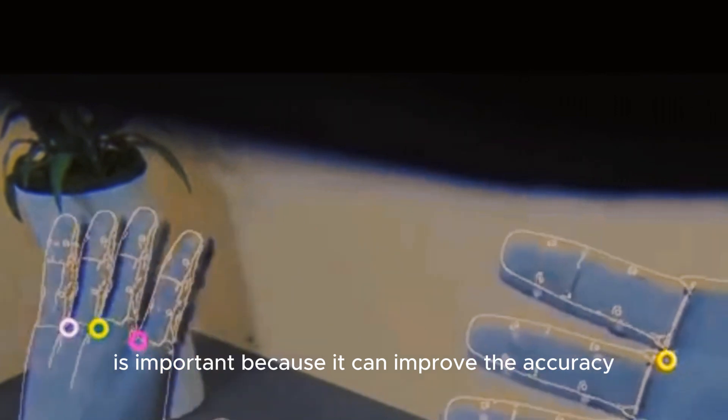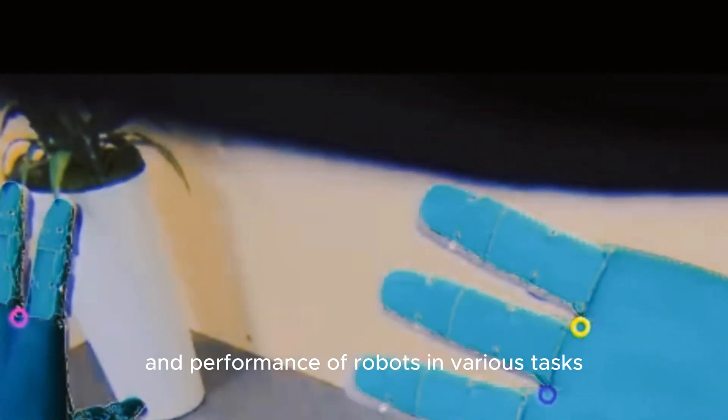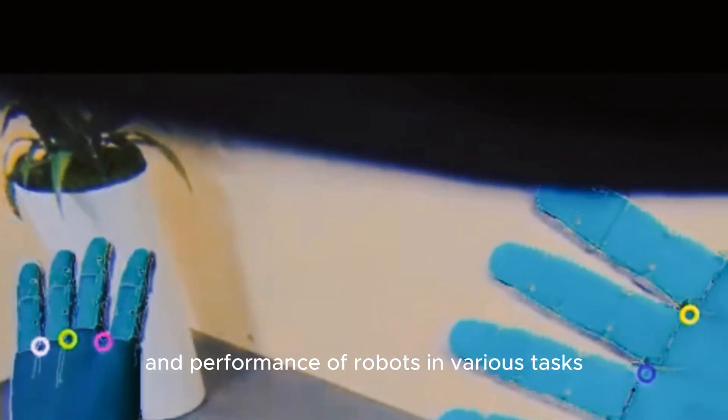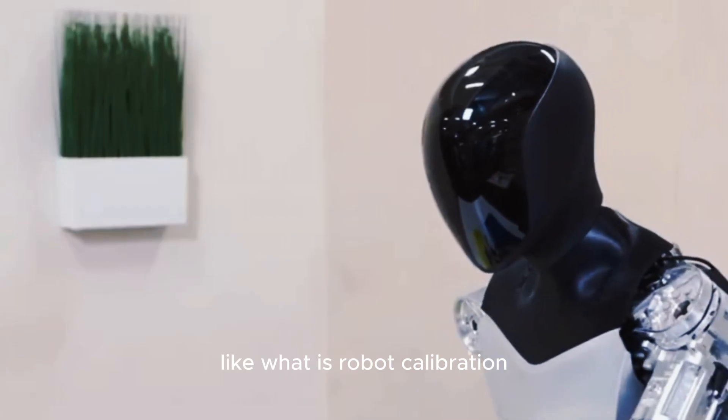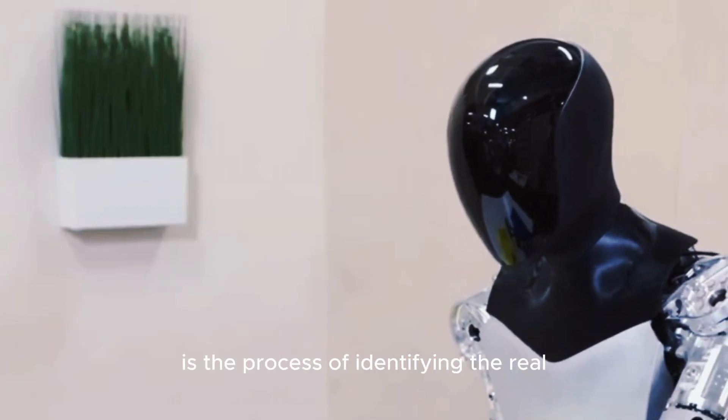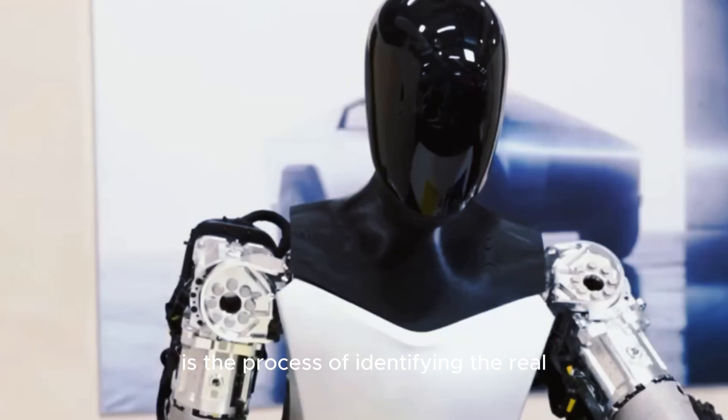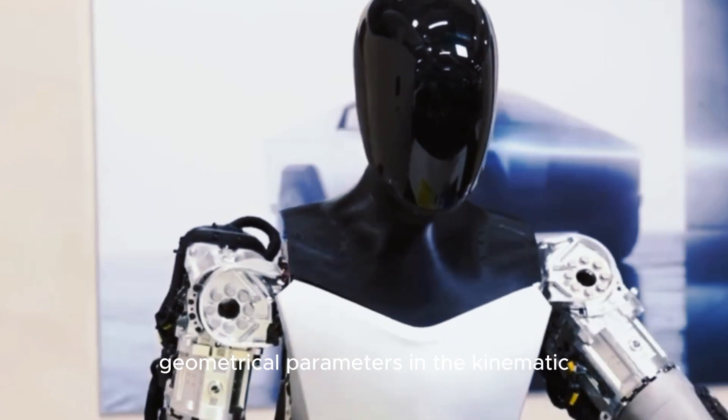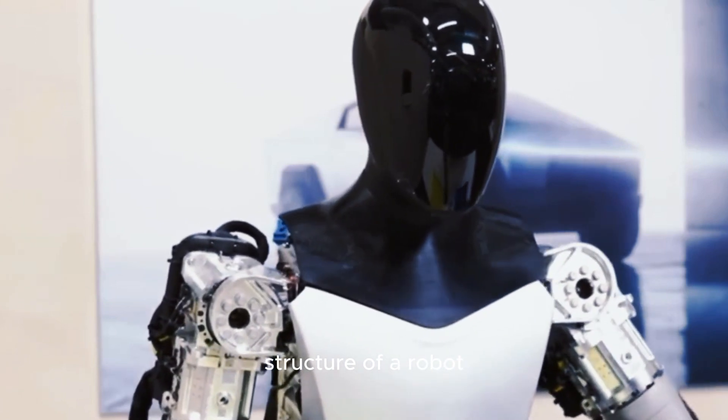Robot self-calibration is important because it can improve the accuracy and performance of robots in various tasks. Robot calibration is the process of identifying the real geometrical parameters in the kinematic structure of a robot, such as the relative position of joint links.